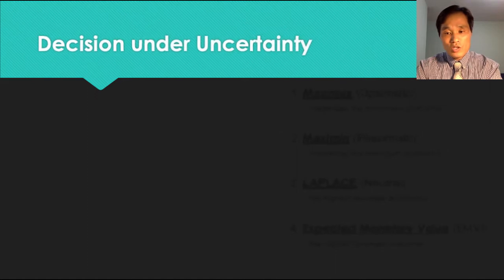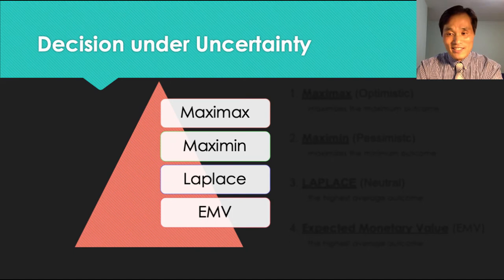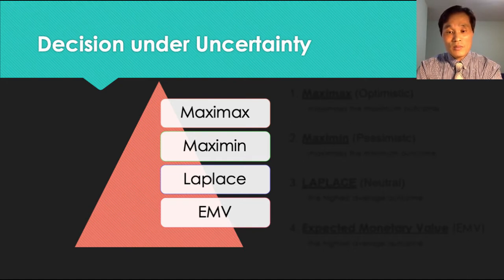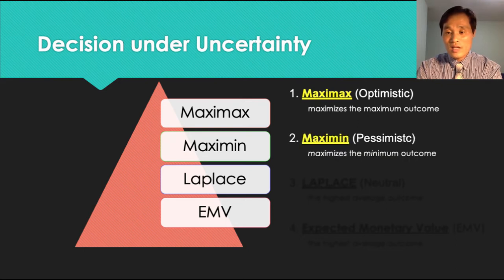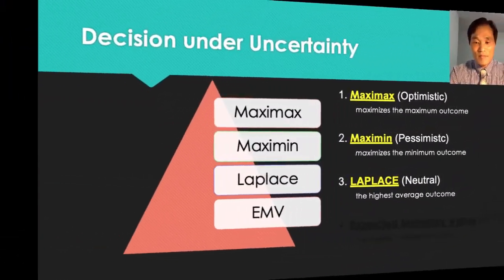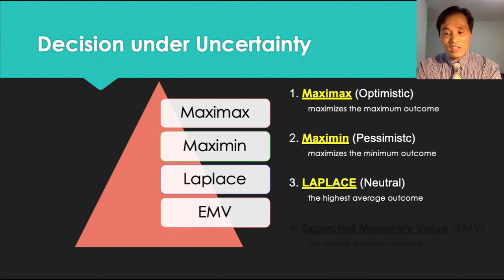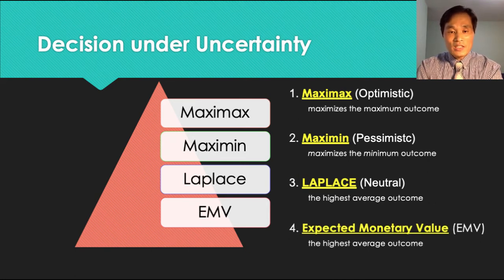There are three approaches to take under uncertainty. MaxMax is an optimistic decision criteria — it chooses the alternative that maximizes the maximum outcome. Managers who take this approach should choose the outcome with the highest gain. The second approach is MaxMin, a pessimistic decision criteria — managers pick the outcome with the least possible loss. The Laplace choice is the equally likely approach; it assumes each state of nature is equally likely to occur, takes probability into account, and the highest average outcome is chosen.